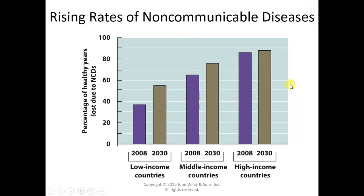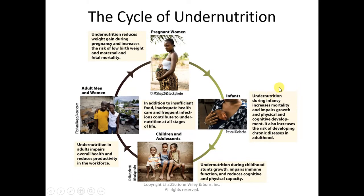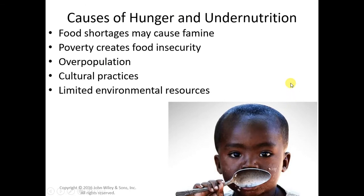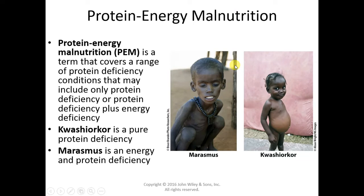With the overconsumption of a Western-like diet, we see a rise in non-communicable, or chronic, diseases. Undernutrition has a toll as well — when there is severe undernutrition, we see the impact through the entire life cycle and into the next generation. There are many reasons for hunger and undernutrition in the world: politics, culture, food shortages, and poverty. Poverty is at the base of many of these problems.